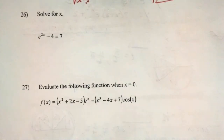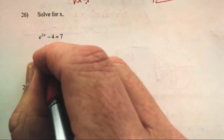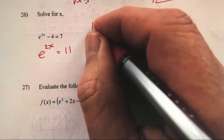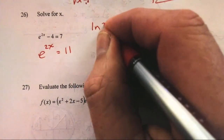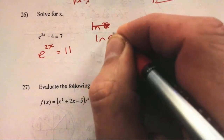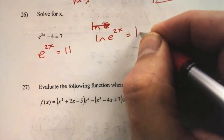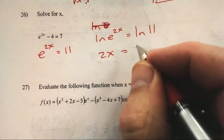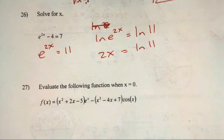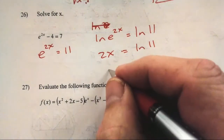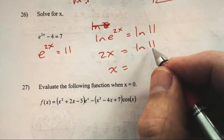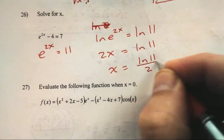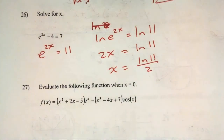Problem 26: Solve e^(2x) = 11. Take ln of both sides: ln(e^(2x)) = ln(11), so 2x · ln(e) = ln(11), giving 2x = ln(11). Therefore x = ln(11)/2. That is the exact answer. If you want a decimal, use a calculator.